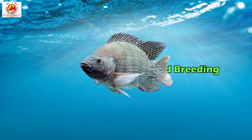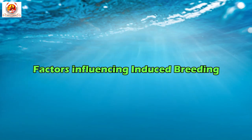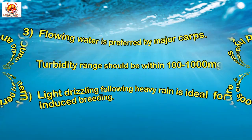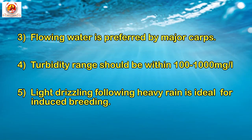Now let us come to the factors influencing induced breeding. Point one: favorable climatic and hydrological conditions increase the chances of successful induced breeding. Point two: cool weather — temperature in the range of 24 to 31 degrees centigrade — and rainy periods enhance breeding. Third point: flowing water is preferred by major carps. Fourth point: turbidity range should be within 100 to 1000 mg per litre. Fifth point: light drizzling following heavy rain is ideal for induced breeding.